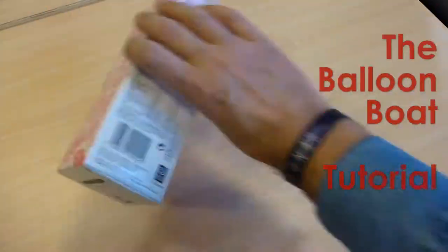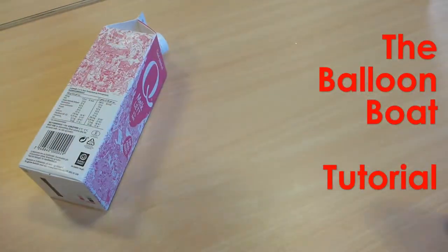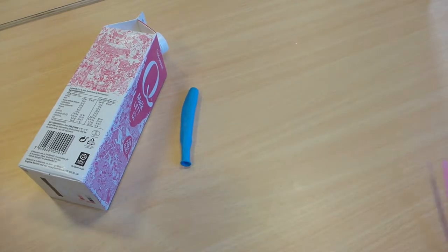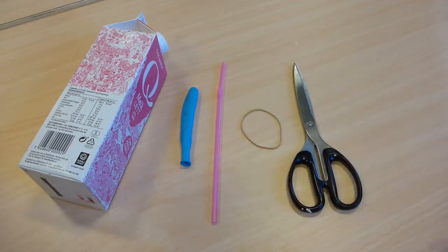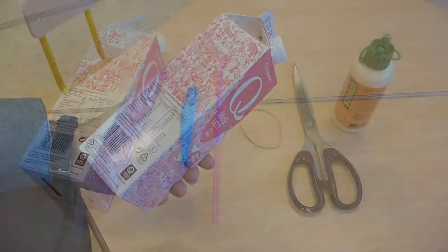The balloon boat is easy to build. You need a milk carton, a toy balloon, a bendy straw, a rubber band, a pair of scissors, and some glue.